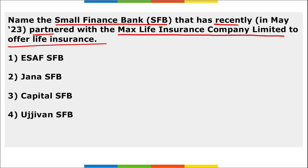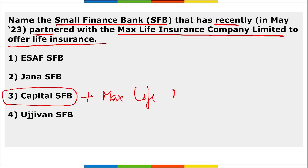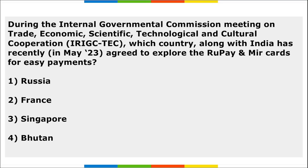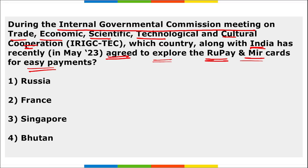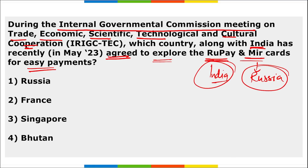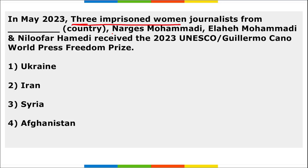Capital Small Finance Bank partnered with Max Life Insurance Company Limited to offer life insurance services. During the Intergovernmental Commission meeting on trade, economic, scientific, technological, and cultural cooperation, India and Russia agreed to explore the use of rupee and Mir cards for easy payments, enabling hassle-free transactions in Indian rupees and Russian rubles in their respective countries.